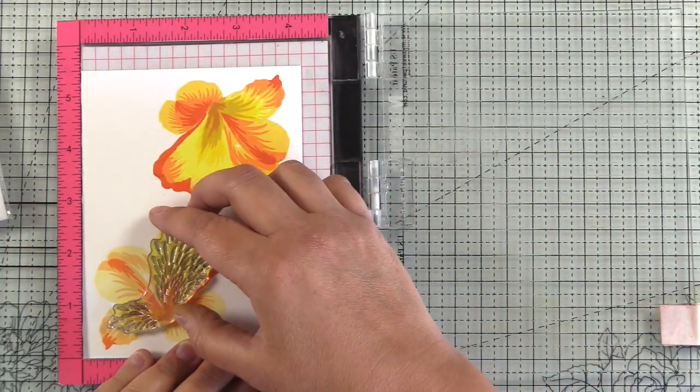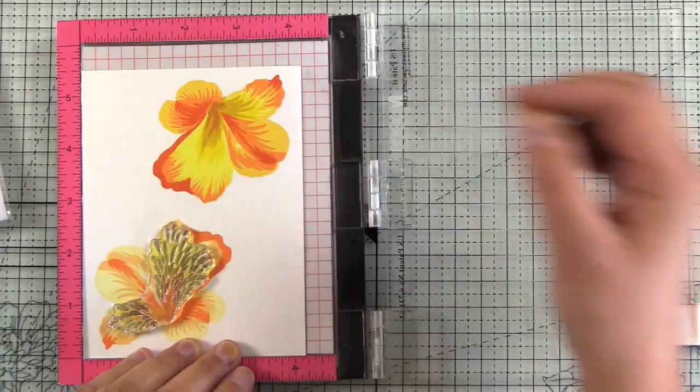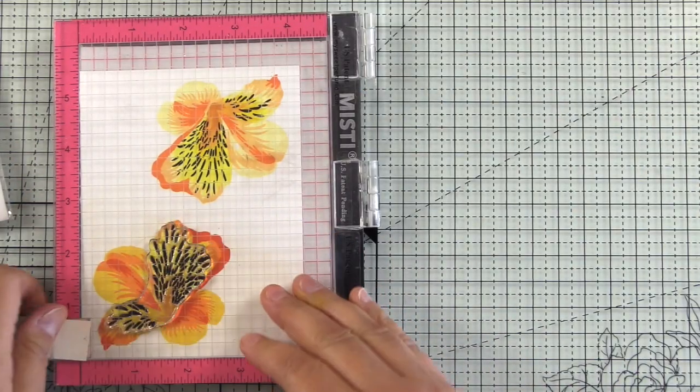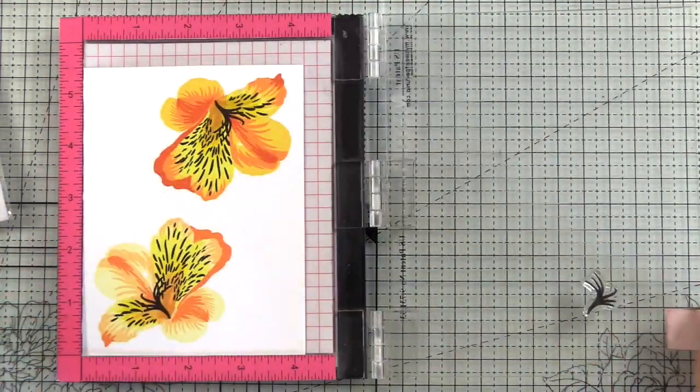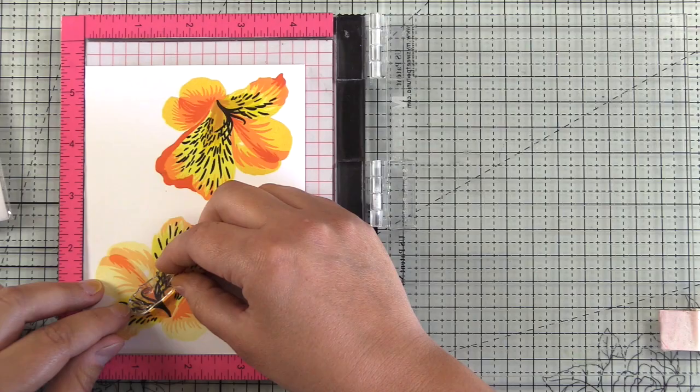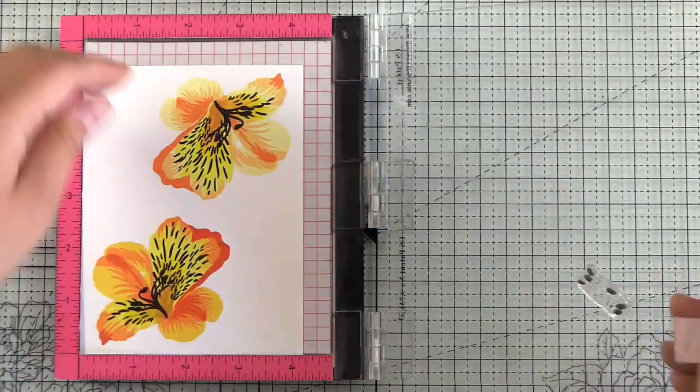Now even though this stamp set has 10 layers to create this incredibly realistic lily, it's extremely easy to line up and I showed you how I just wiggled the stamp back and forth just a little bit to see where those edges line up.